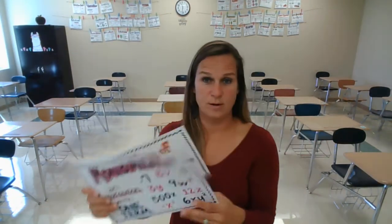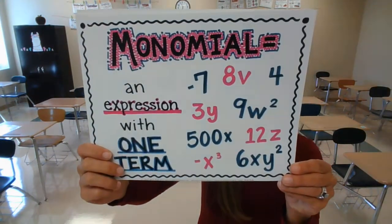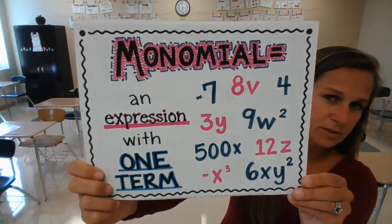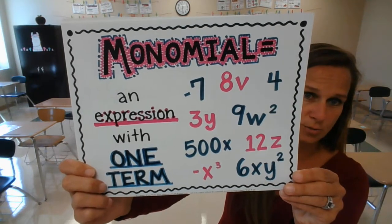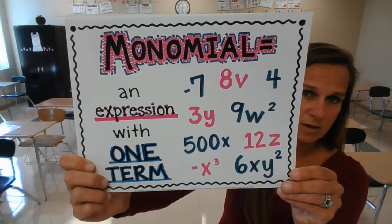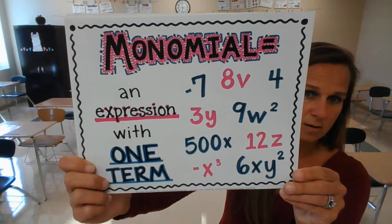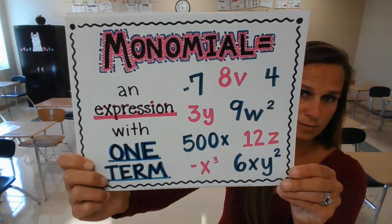If we have only one term, that would be a monomial. Mono is an expression with one term. So a monomial would be something like 8v or negative x to the third.